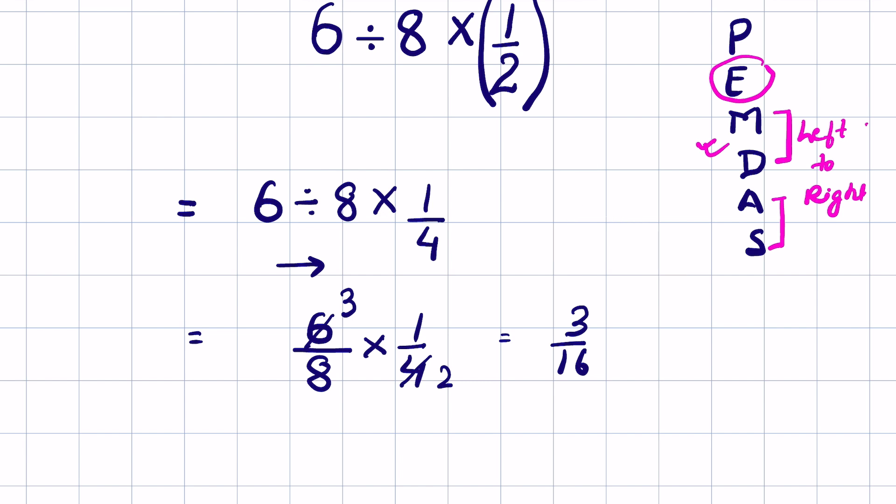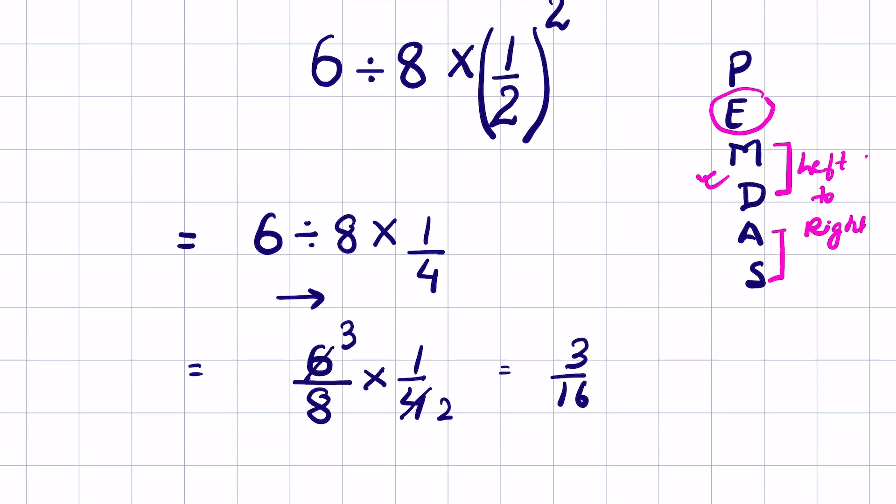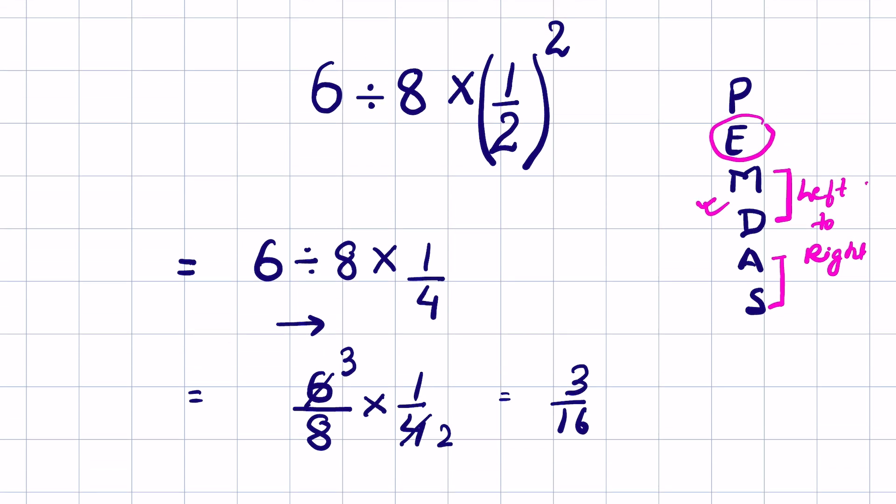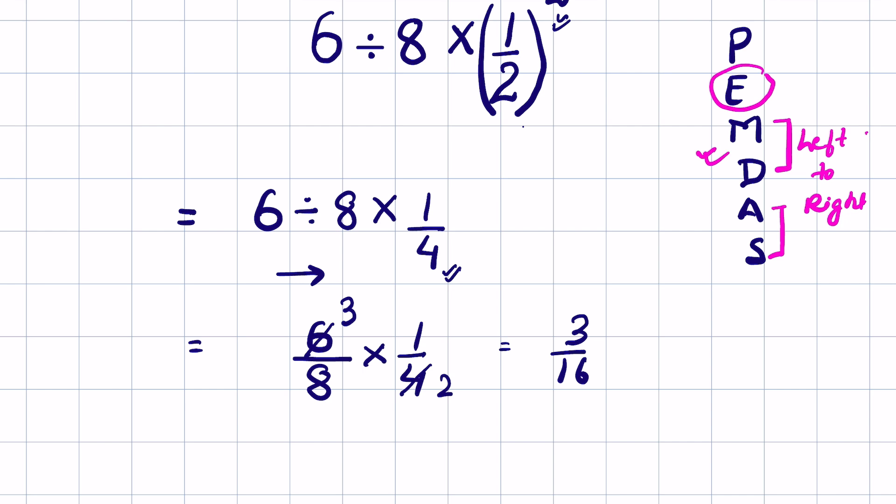But since you have to follow the left to right rule, it will be 6 upon 8 then multiply it to 1 upon 4. Now also remember that this bracket is not a parenthesis. This is just a means to denote the exponent part. So we already did the exponent here, so we removed the parenthesis. And after that we have to follow the left to right rule in division and multiplication.